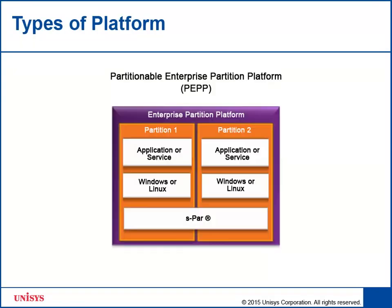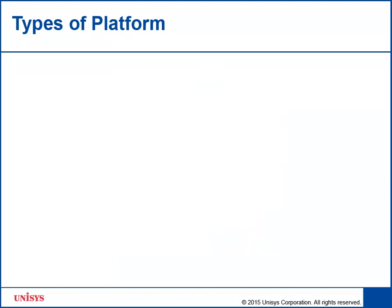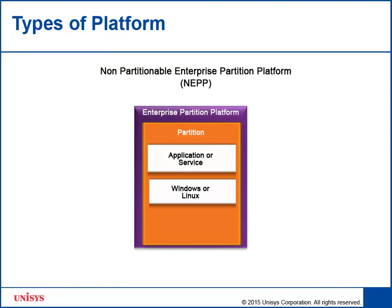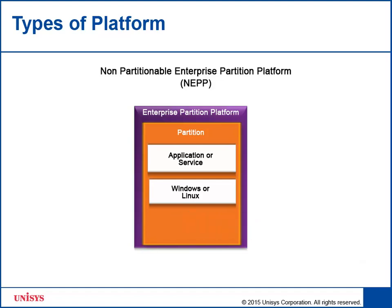There are two types of platforms in ClearPath Forward Fabric. Partitionable Enterprise Partition Platform, or PEPP, is Unisys Intel Enterprise Partition Platform, or EPP, that runs ASPAR firmware in it, and thus can run multiple operating environments simultaneously. Non-partitionable Enterprise Partition Platform, or NEPP, is Unisys Intel EPP that does not run ASPAR firmware in it, and thus can run only a single operating environment.